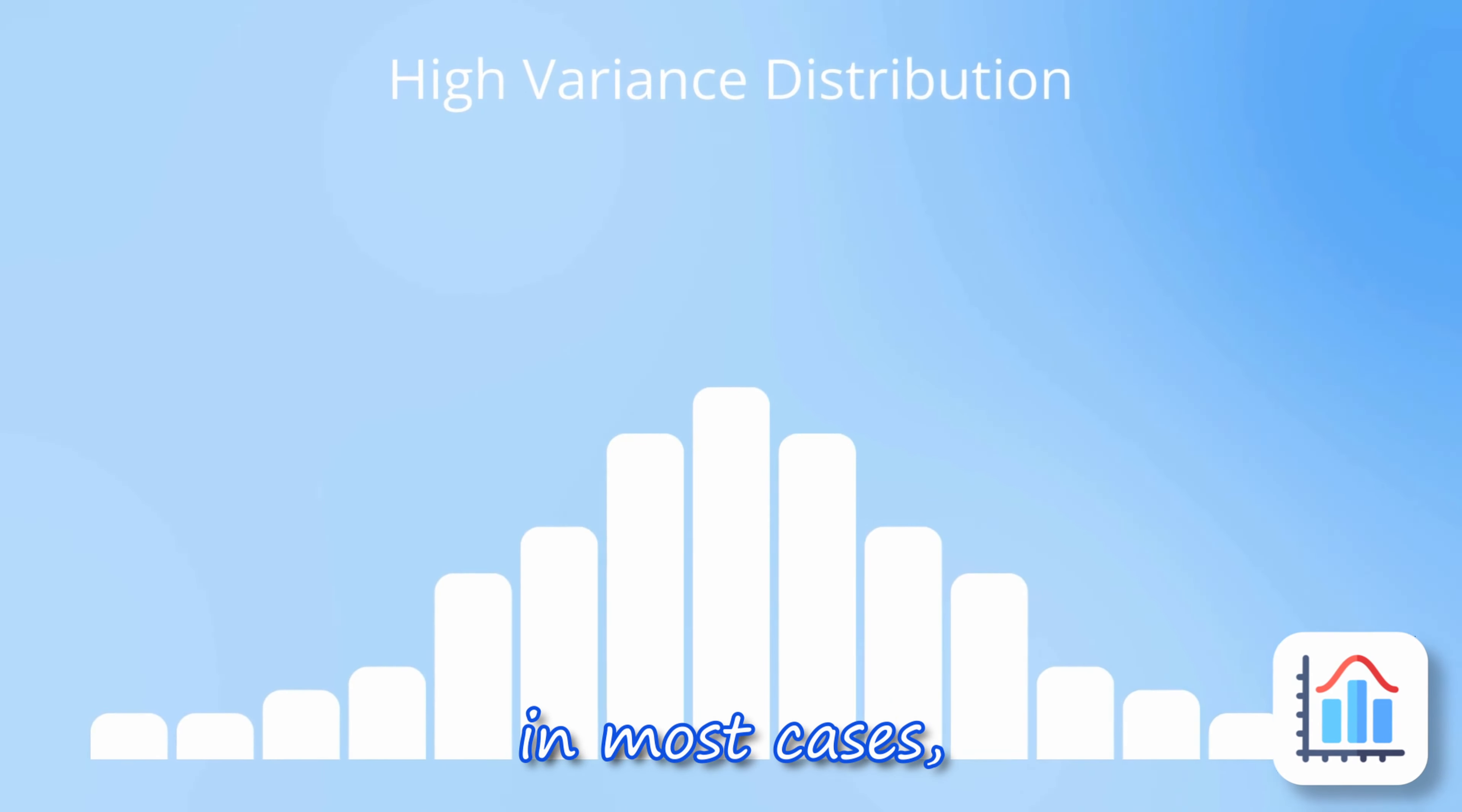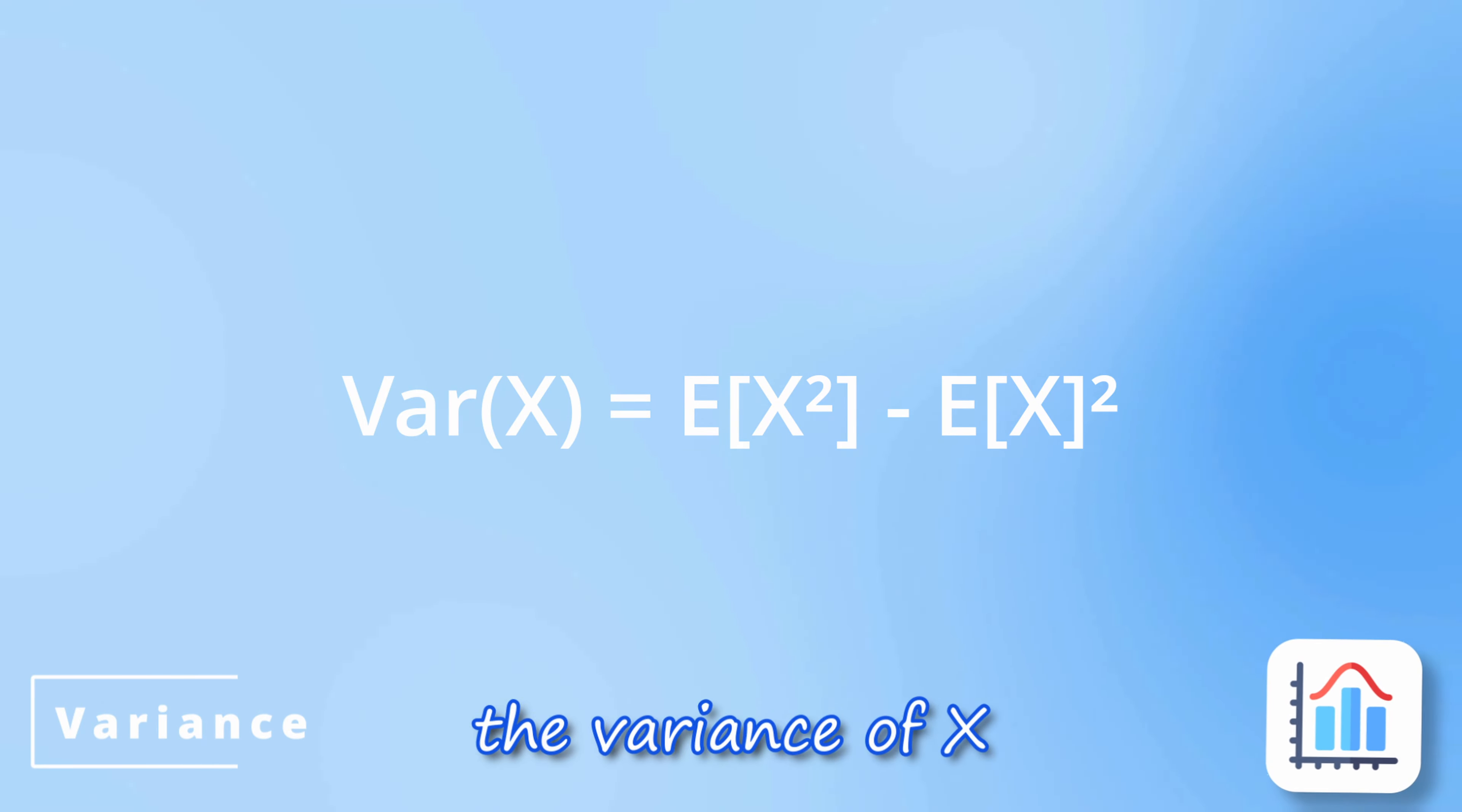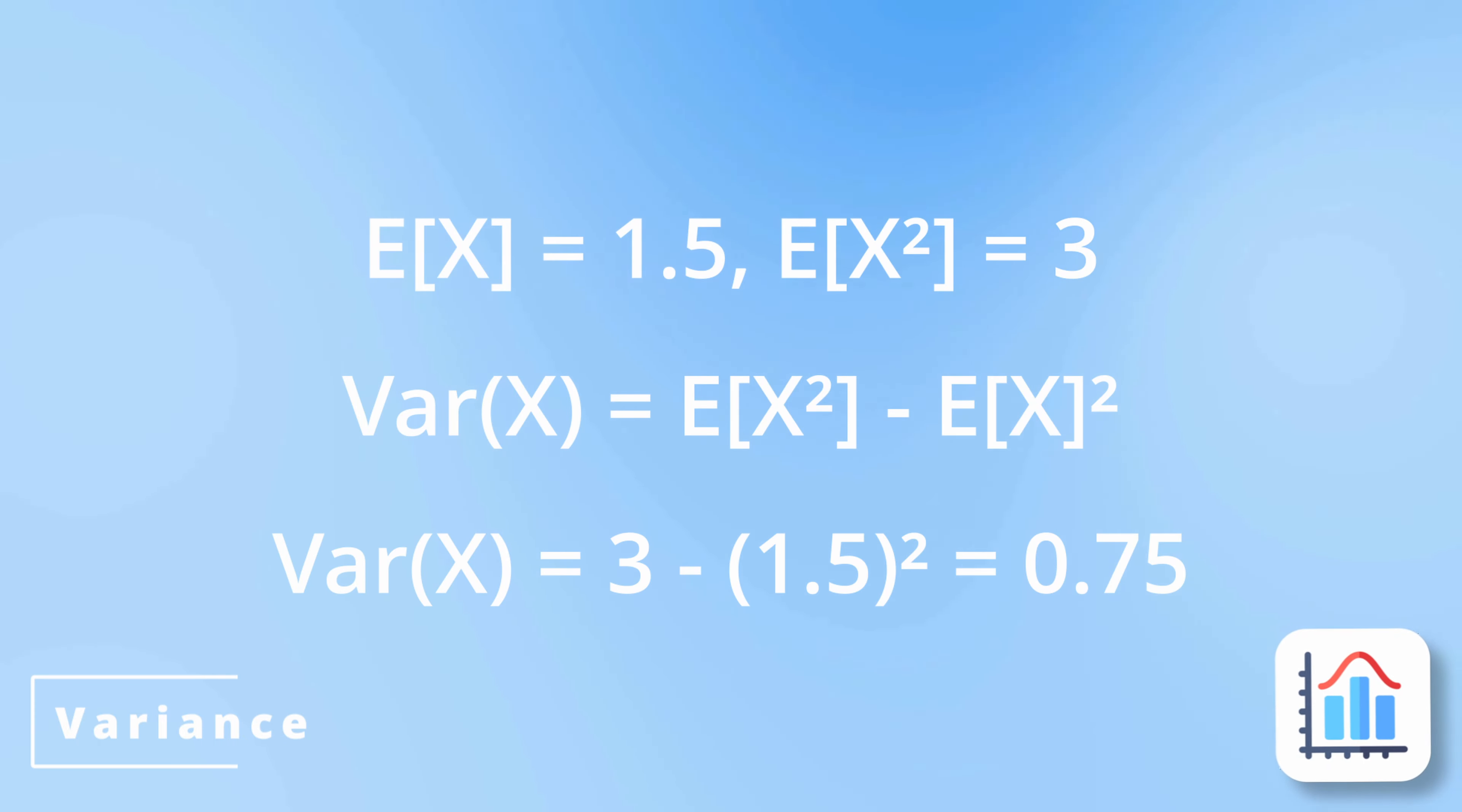When solving questions on the exam, in most cases, it's more efficient to use the shortcut formula for the variance. This formula states that the variance of x is equal to the second raw moment minus the expected value squared. In the example from earlier, we can now calculate the variance of x to be 0.75.